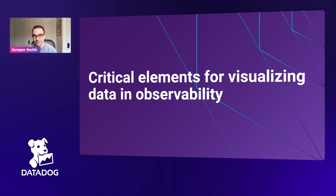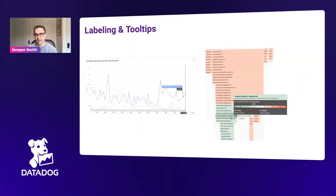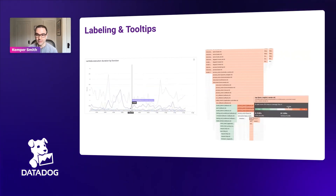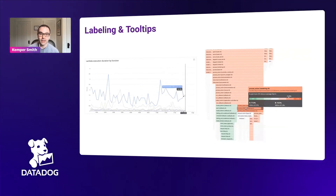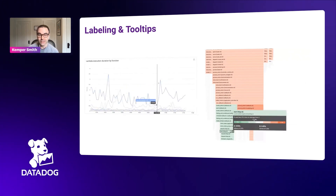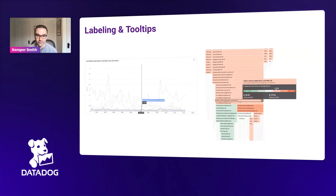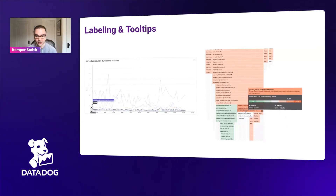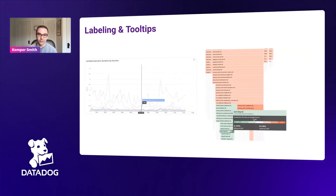Datadog invests a lot of time in specific details of visualization that are critical to observability. First, labeling is absolutely important — an unlabeled visualization is pretty much useless. In observability, labels are often long: long path names, long resource names. We do our best to show these labels overlaid on visualizations, and when we can't fit all meaningful labels, we provide interactive tooltips. We spend a lot of time on labeling.